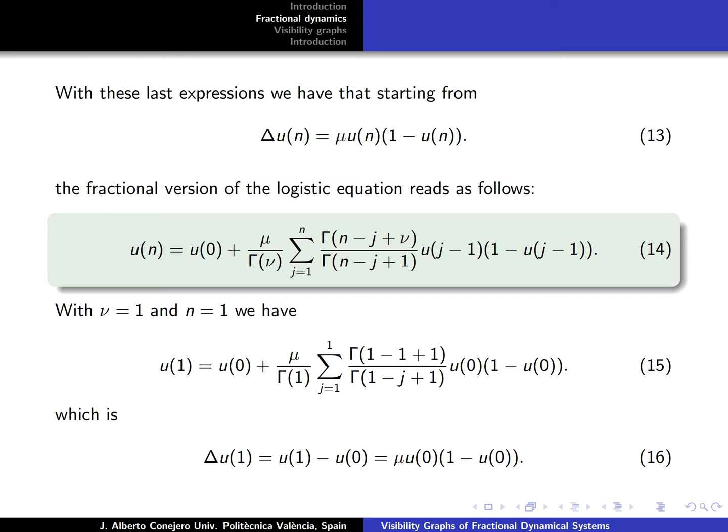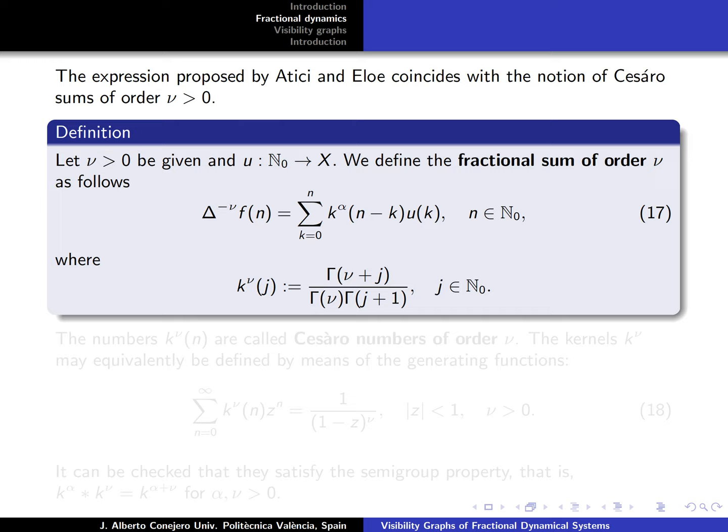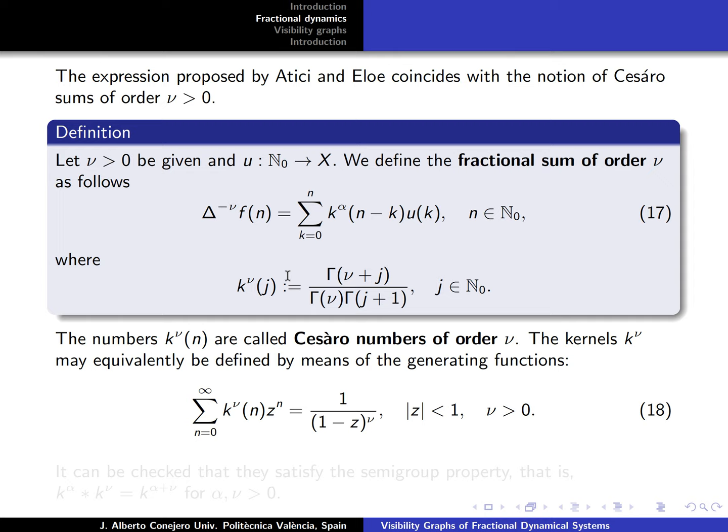One of our contributions is also related with how to obtain or express these fractional sums of order ν. In contrast to the result of Atıcı and Eloe, what we did is that we can represent this with the terms k^{(ν)}, which are called the Cesaro numbers of order ν, and the kernels k_ν may be equivalently defined by means of the generating functions that we have in equation 18.